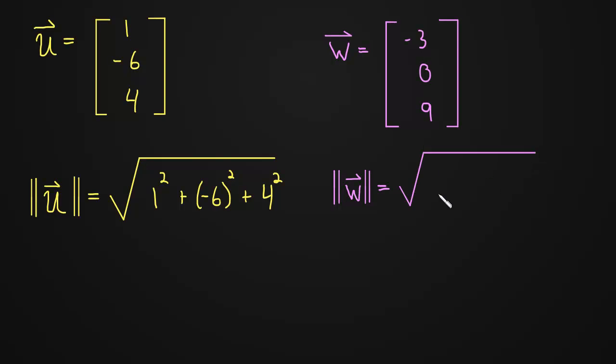It's equal to the square root of negative three squared plus zero squared plus nine squared. And there you have it. There's the length of a vector with three components.